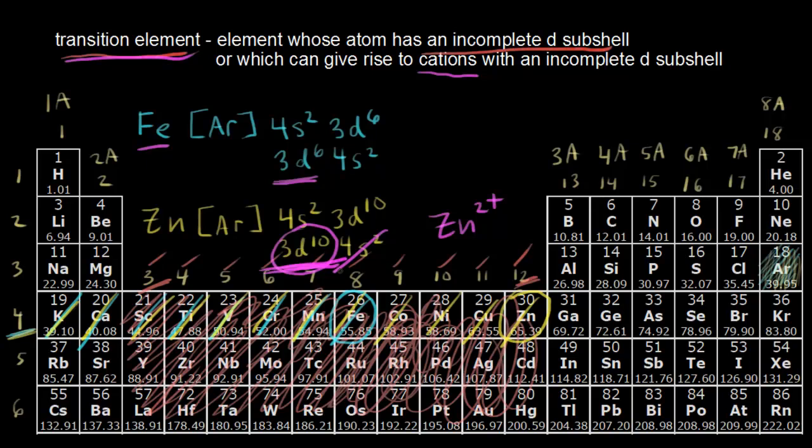And so once again, there are two ways of thinking about it. One's a very general way. So you might hear someone talk about an element from groups 3 to 12 as being a transition metal. Or you might find people who are a little bit more particular about the definition who go along with IUPAC. So it's good to be aware of both ways of thinking about it.